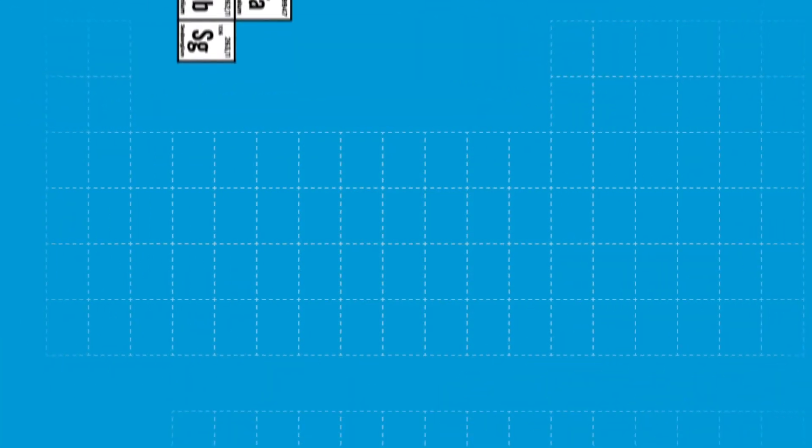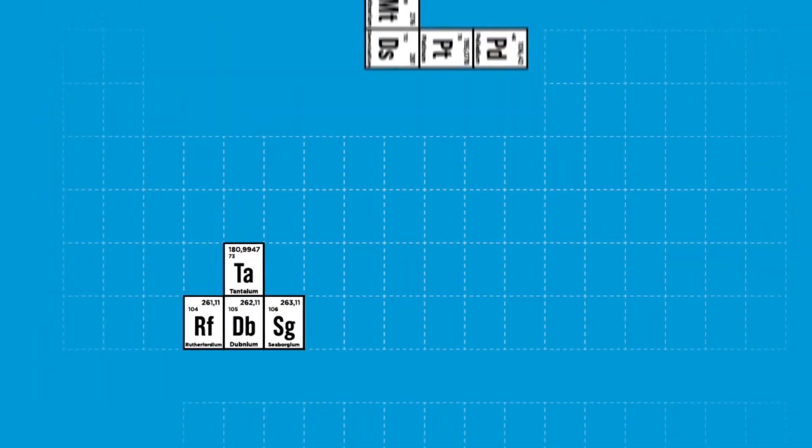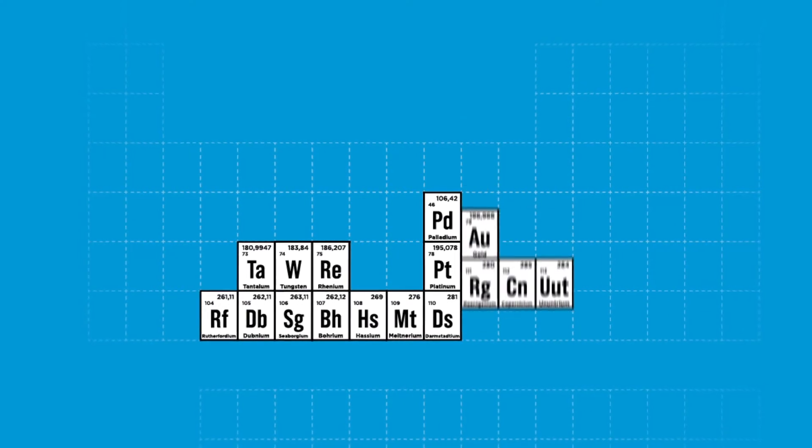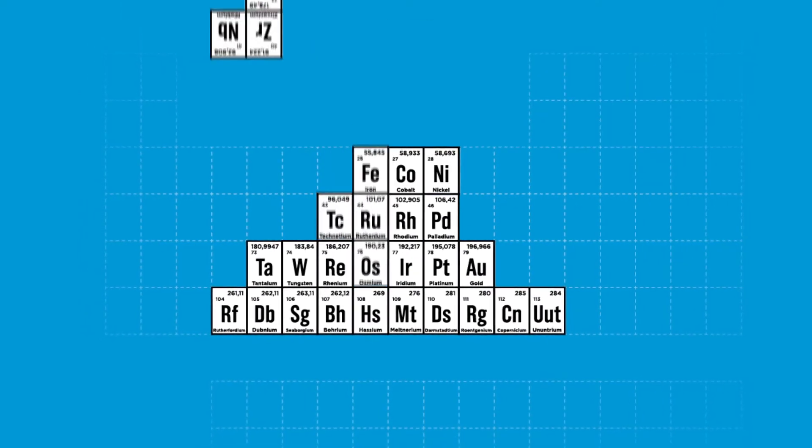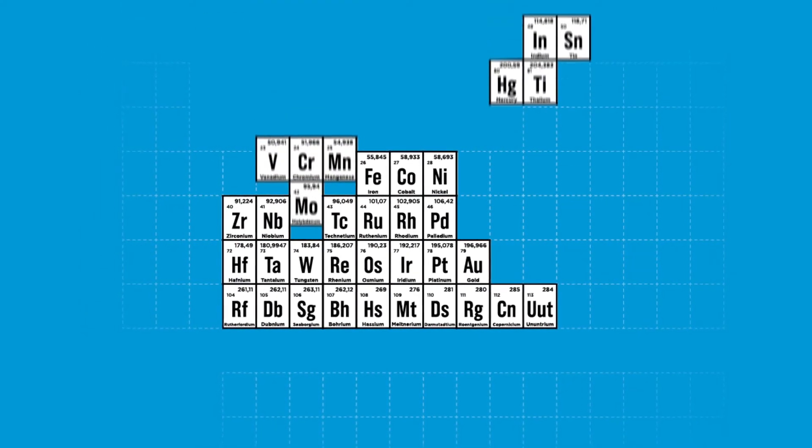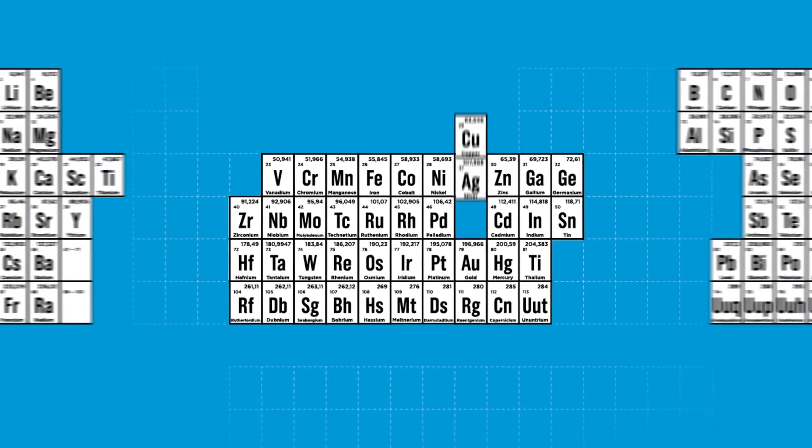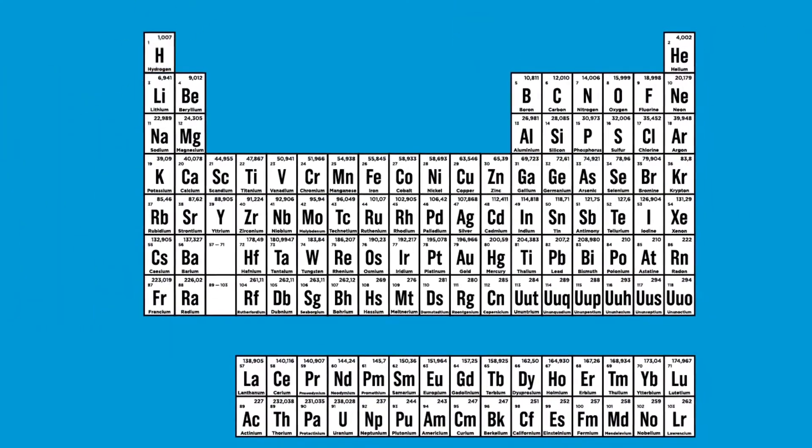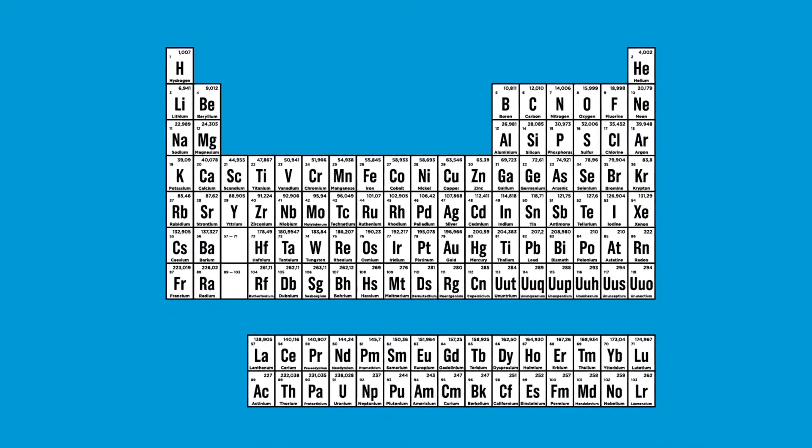The distribution of the elements in the lines and columns of the periodic table is not random or just a question of design. The position of an element on the table tells us something about its chemical and material properties and helps us to know and predict how two elements can combine.